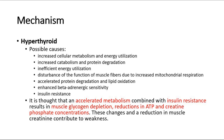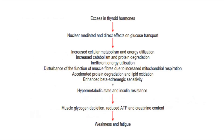It is thought that an accelerated metabolism combined with insulin resistance results in muscle glycogen depletion and reductions in ATP and creatine phosphate concentrations. These changes, along with a reduction in muscle creatinine, contribute to weakness. This flow chart shows the simplified mechanism of proximal myopathy in hyperthyroidism.